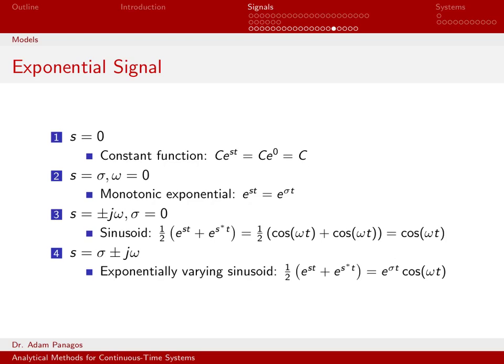Well, e to the sigma t out front is just e to the 0 or 1, so all we're left with for this term is cosine omega t plus j sine omega t. We also computed this on the previous chart. If you let sigma equals 0, you're left with simply cosine omega t minus j sine omega t.